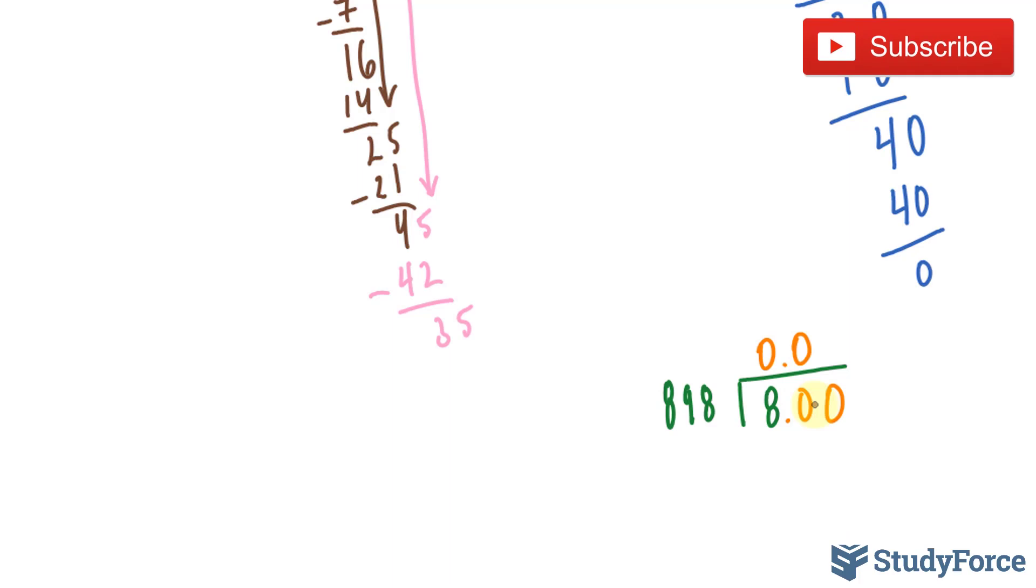898 fits into 800, 0 times. So we'll put another 0. Finally, we place another 0. And then we ask how many times does it fit into 8,000.